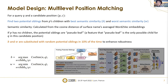The model design begins with multi-level position matching. For a query Q and candidate position PC, we find two potential siblings by semantic similarity. The semantic similarity is calculated from the cosine distance of surface names' average GloVe embeddings. If parent P has no children, meaning there are no potential siblings, the potential siblings are set to pseudo leaf — acting as a feature for the model that pseudo leaf is the only possible child for Q in this candidate position. To enhance robustness, the B and W siblings are substituted with random potential siblings 10% of the time.